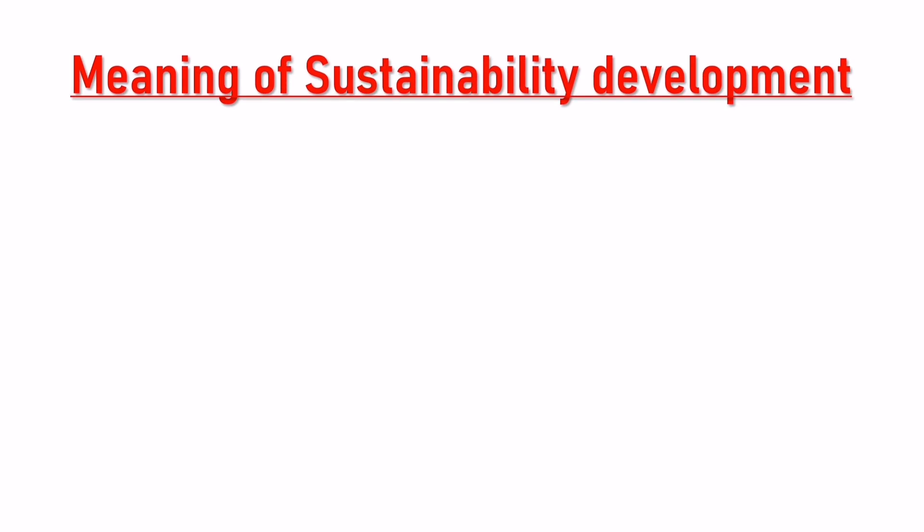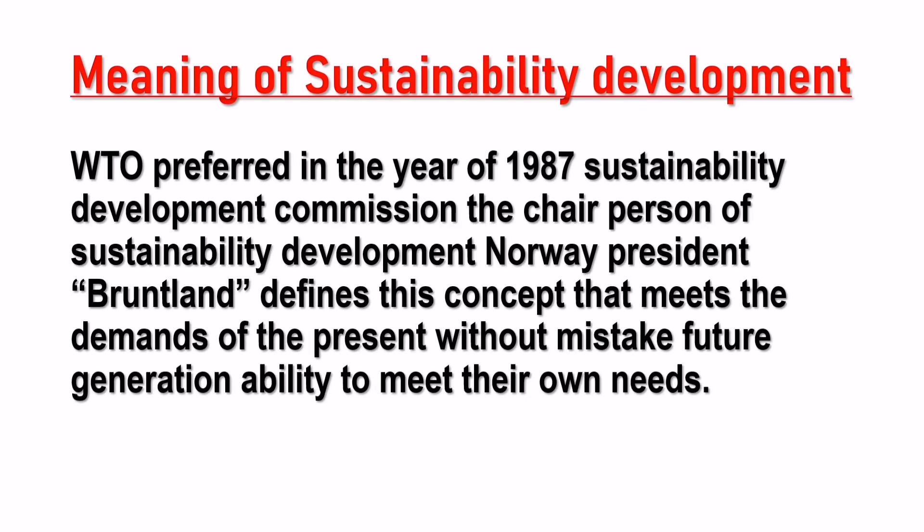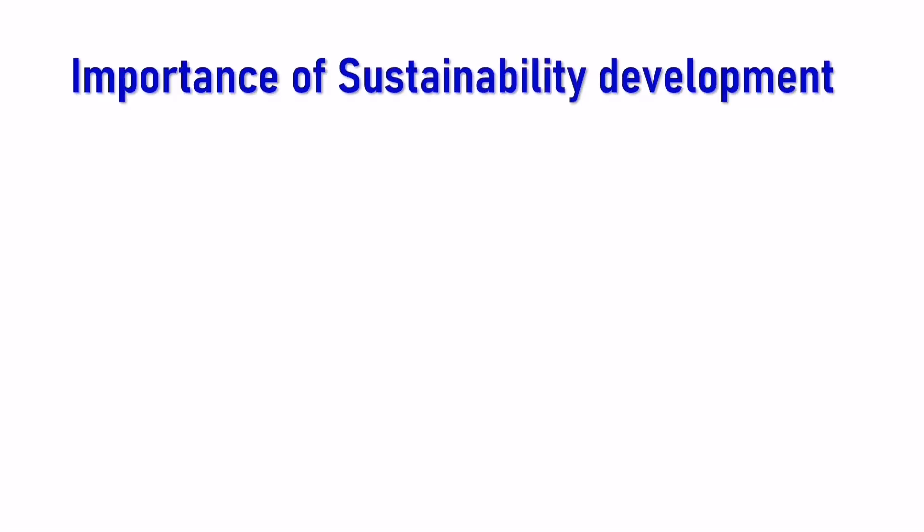Let us see the meaning of sustainability. In 1987, the World Commission on Environment and Development defined sustainability. The chairperson, Norway's Prime Minister Brundtland, defined the concept as meeting the demands of the present without compromising the future generation's ability to meet their own needs. This is the meaning of sustainable development.